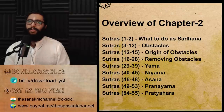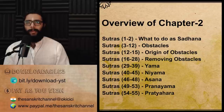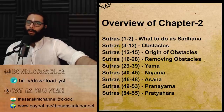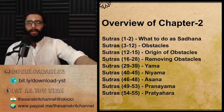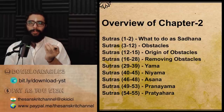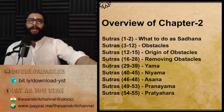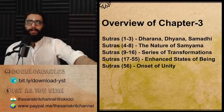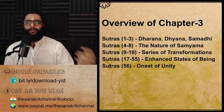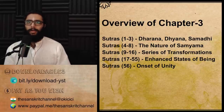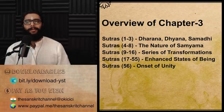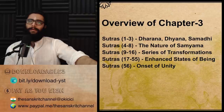Sutras 29 to 55 and beyond talk about the eight Angas or limbs of Yoga — various components in the practice of Yoga. In Sadhana Pada we looked at the first five: Yama, Niyama, Asana, Pranayama and Pratyahara. We looked at various subdivisions of which practices constitute Yama, Niyama, and the definitions of Asana and Pranayama — given in the most precise possible definitions, covering basic principles governing each practice.